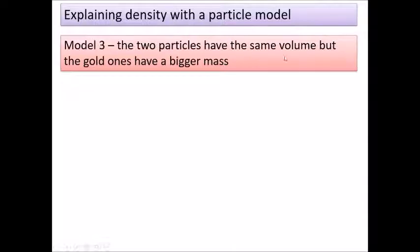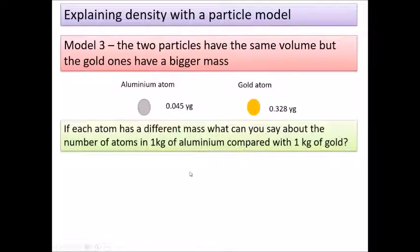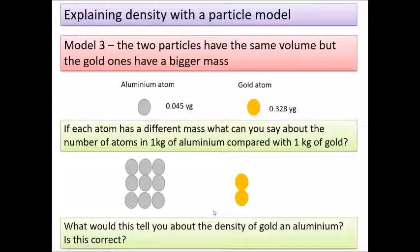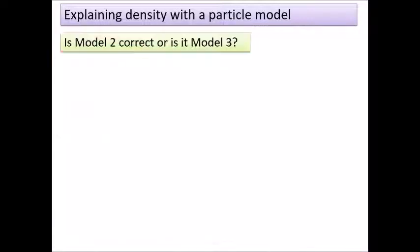Here's a third model: the two particles have the same volume, but the gold ones have more mass. With nine aluminium particles versus fewer gold particles making the same total mass, we'd have a smaller volume for the same mass in gold — therefore the density of gold is higher. So models two and three could both explain, using the particle model, why densities are different.